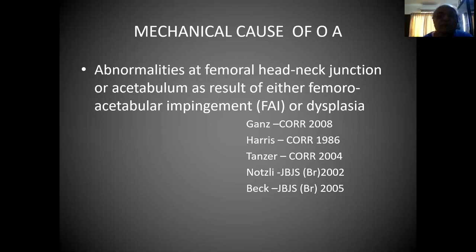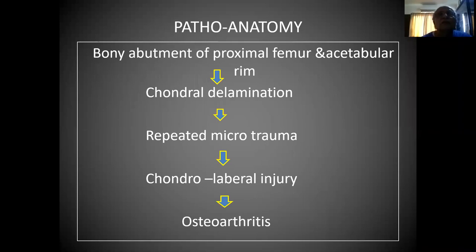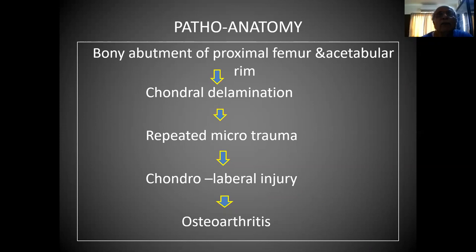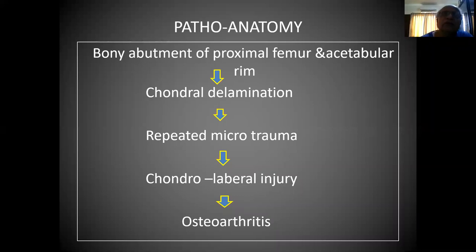You see Gans is on the top among those who worked hard on this entity. What is the patho-anatomy of these patients? A bony abutment of the proximal femur and acetabular rim starts slowly causing chondral delamination, because we do a lot of activity, and at the maximum level of activity where the femoral head comes into action at the level of the acetabular margin, that is when chondral delamination starts.